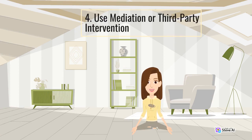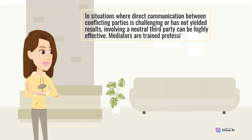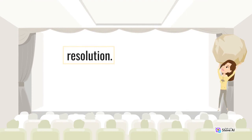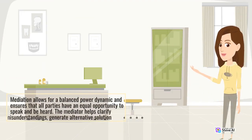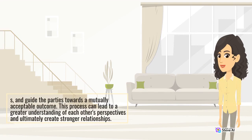4. Use Mediation or Third-Party Intervention. In situations where direct communication between conflicting parties is challenging or has not yielded results, involving a neutral third party can be highly effective. Mediators are trained professionals who facilitate communication and negotiation between conflicting parties. Their role is to create a safe and structured environment where everyone can express their concerns and work towards a resolution. Mediation allows for a balanced power dynamic and ensures that all parties have an equal opportunity to speak and be heard. The mediator helps clarify misunderstandings, generate alternative solutions, and guide the parties towards a mutually acceptable outcome. This process can lead to a greater understanding of each other's perspectives and ultimately create stronger relationships.